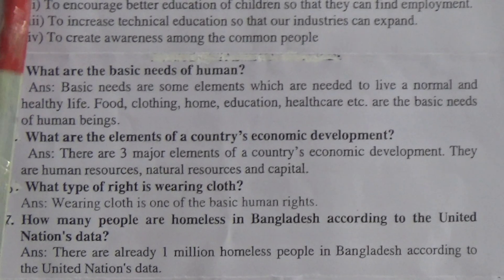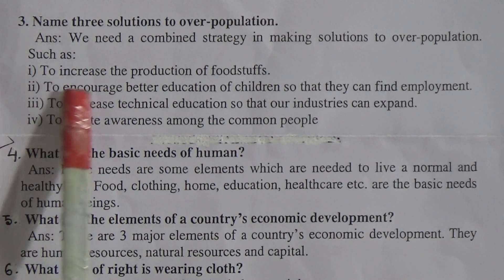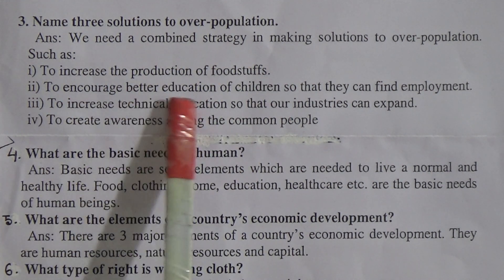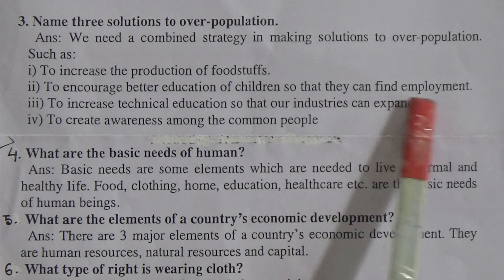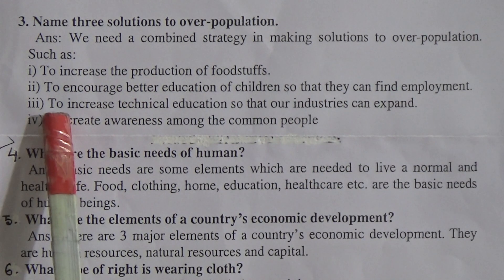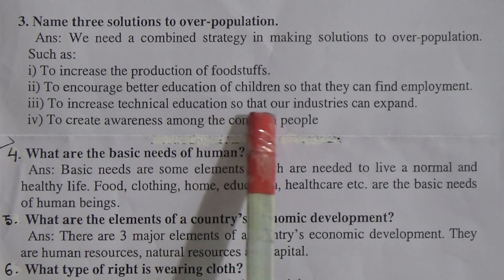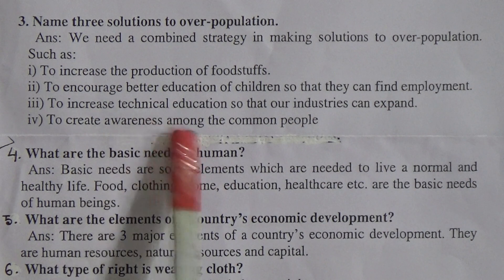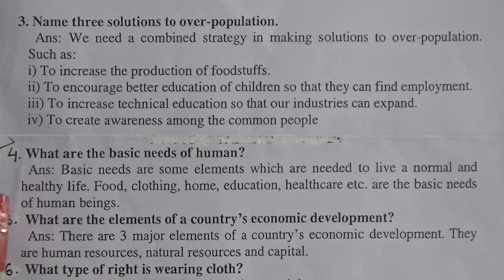Note: there are four solutions given, but you only need to write any three. To recap: increase production of foodstuffs; encourage better education so children can find employment; increase technical education so industries can expand; create awareness among common people.